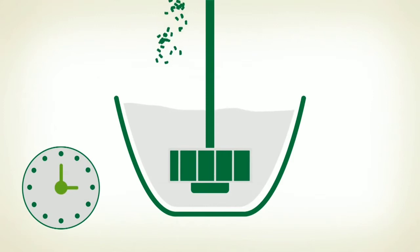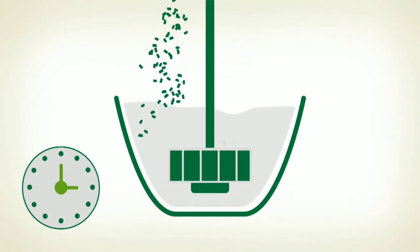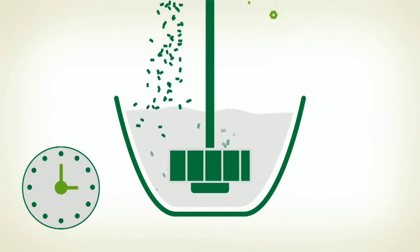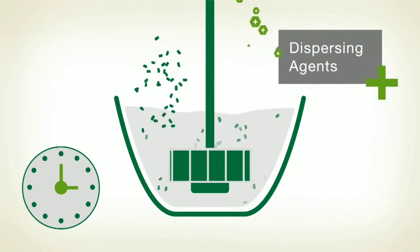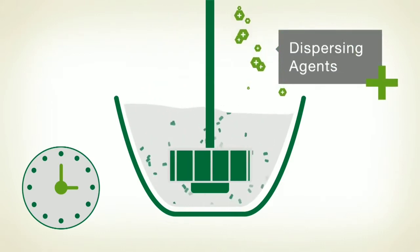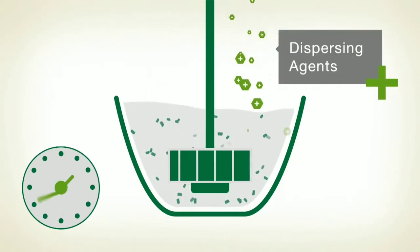The pigment dispersion phase is the most energy consuming part of the paint production process. The choice of the right or optimum dispersing agents supports the grinding process by shortening the dispersing time of pigments.